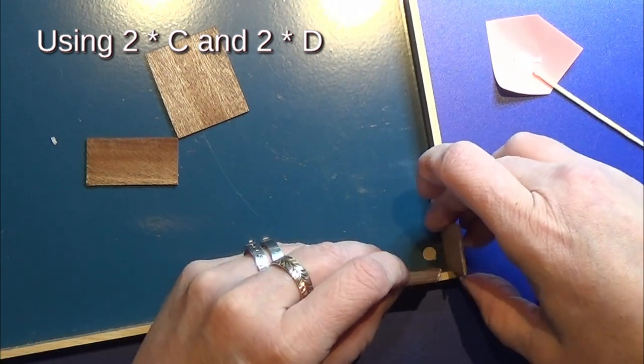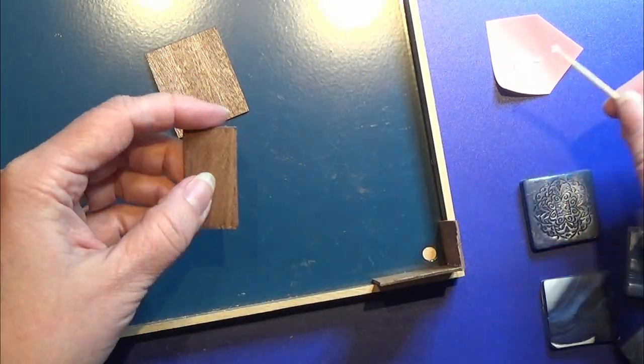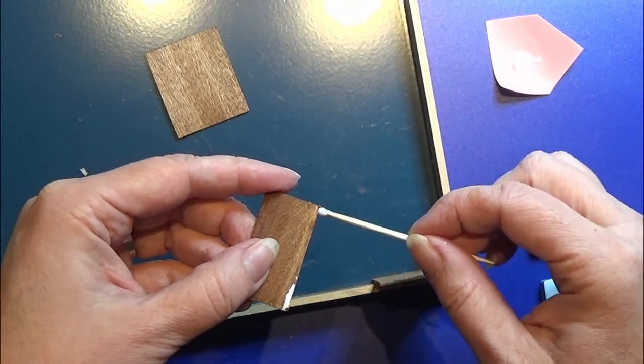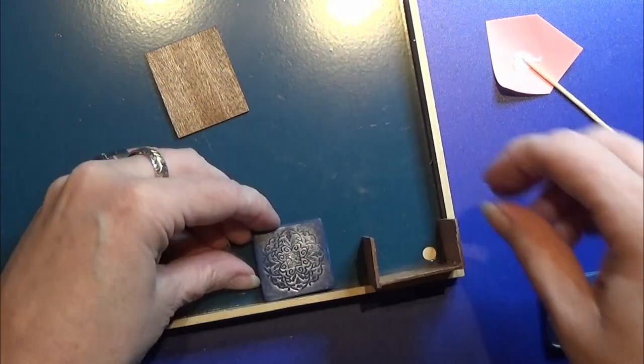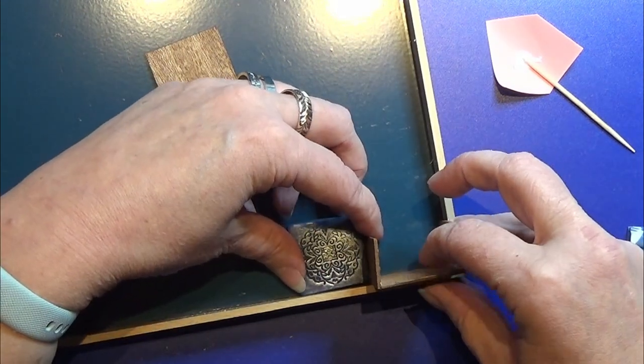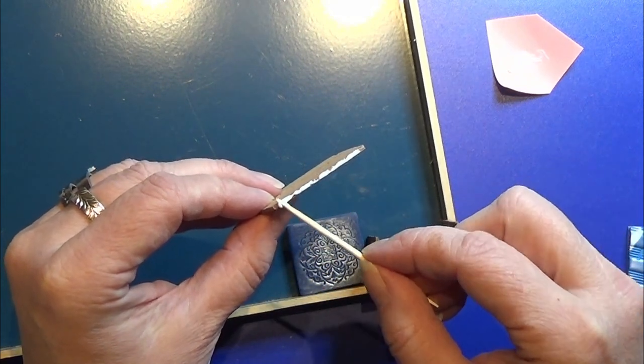I'm using two pieces C and two pieces D to make a box shape, so I'm just going to glue the sides together and make it into this little box. I place it in my glue jig for support while drying.